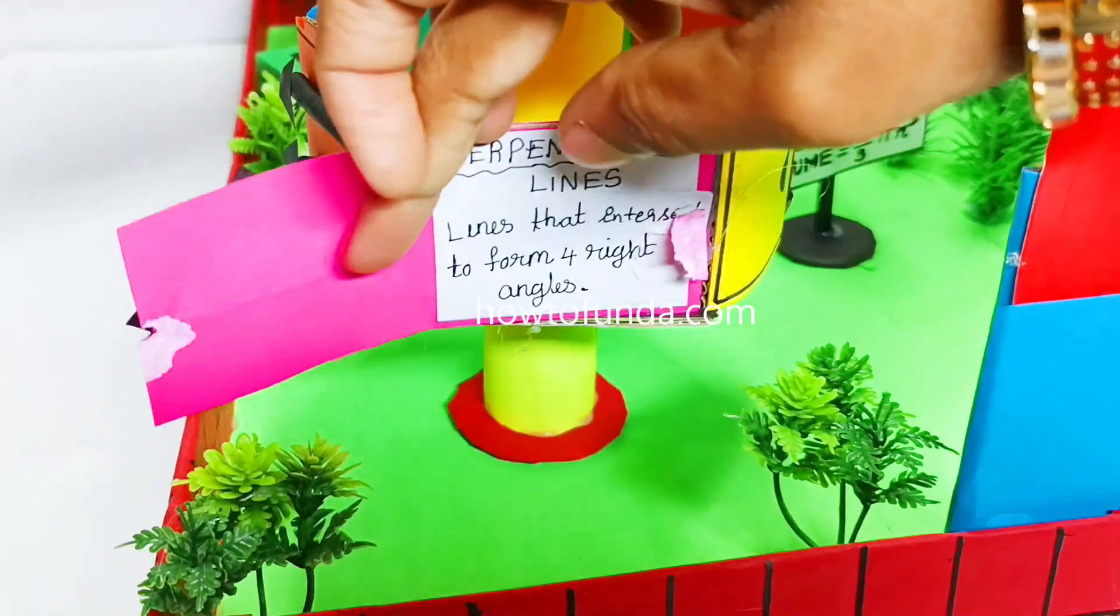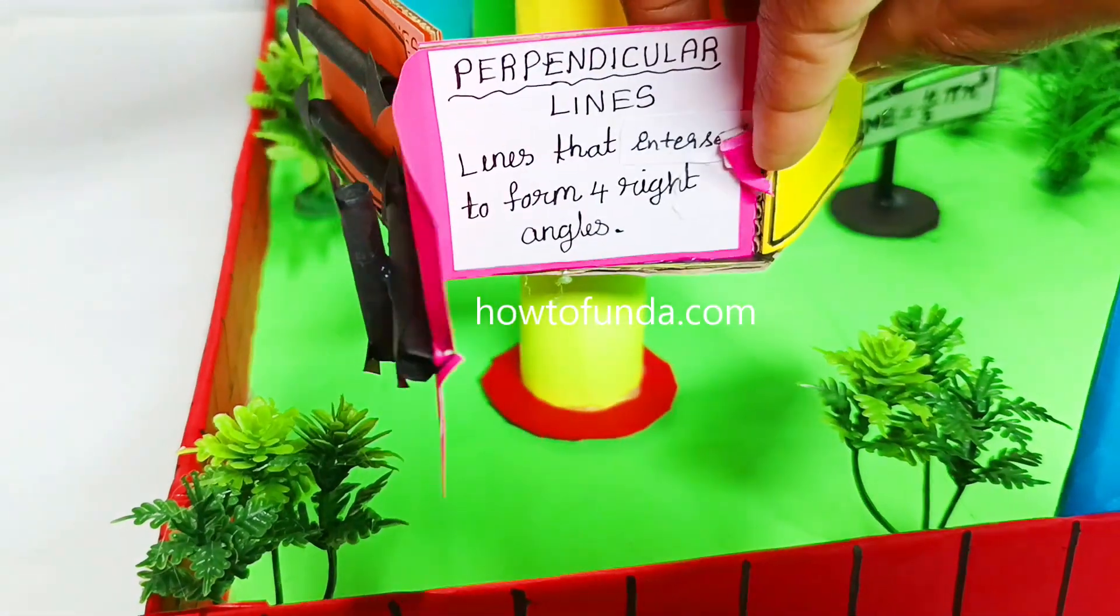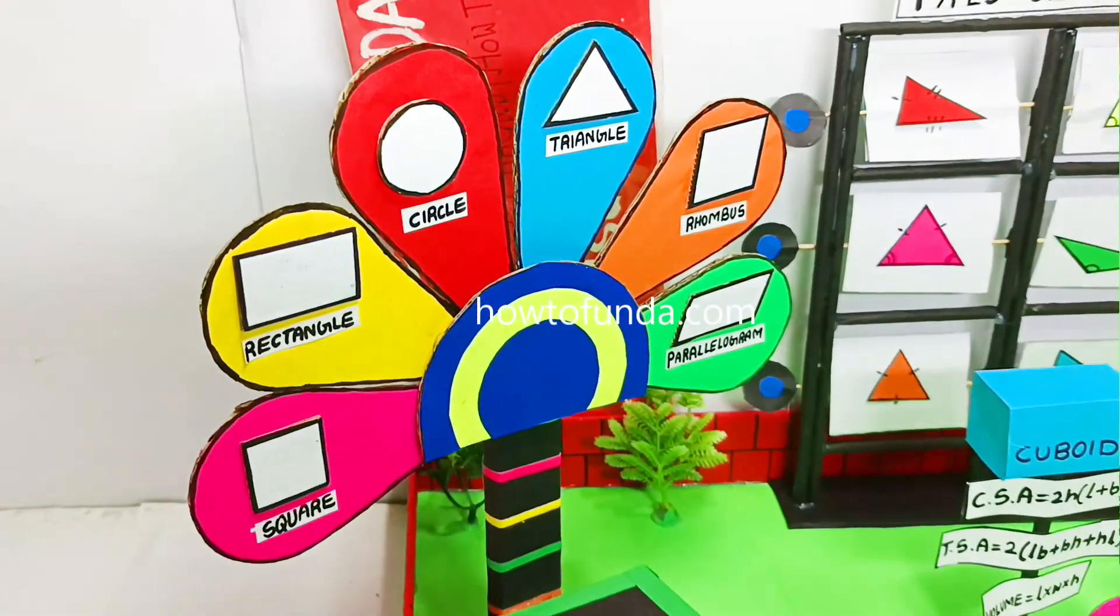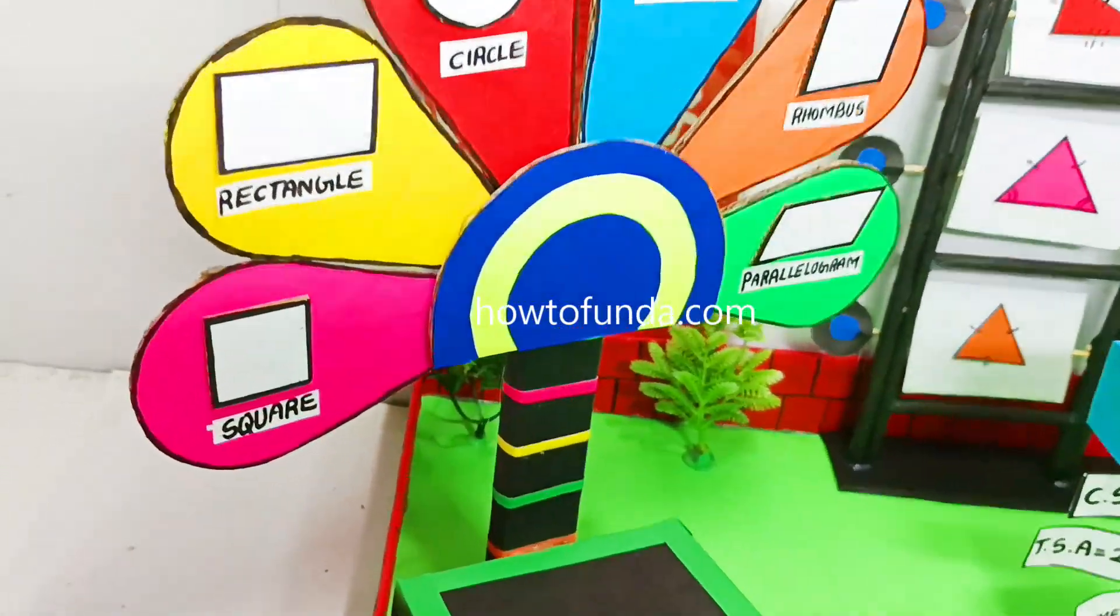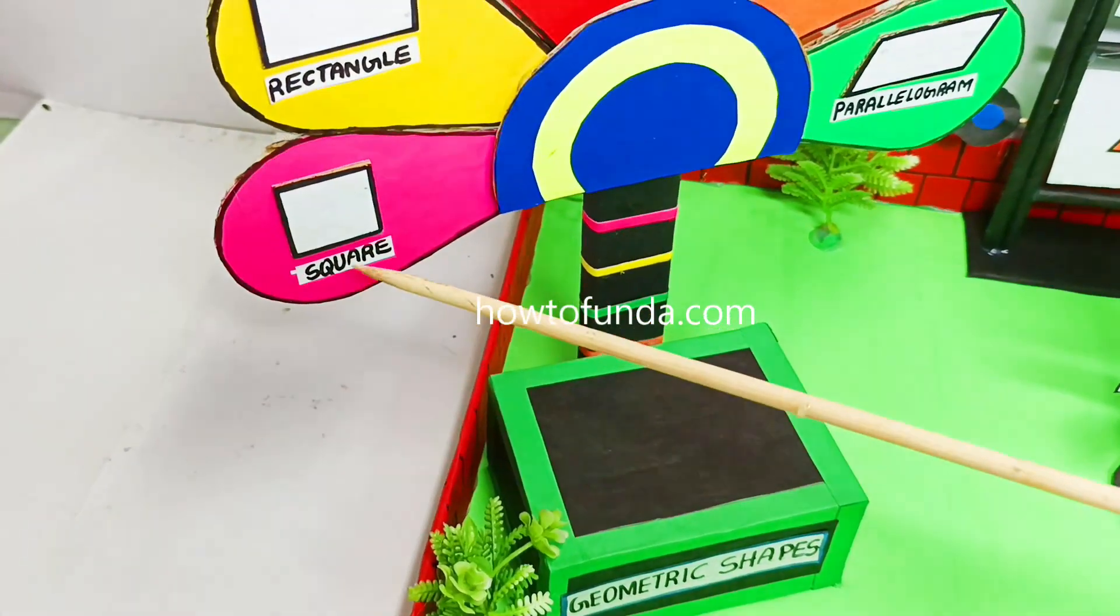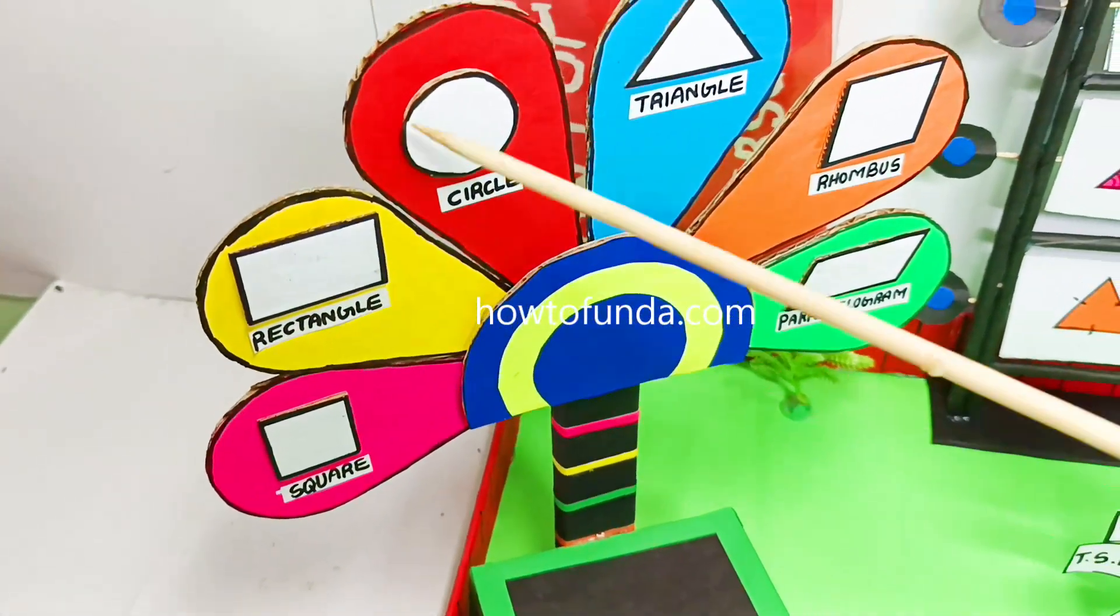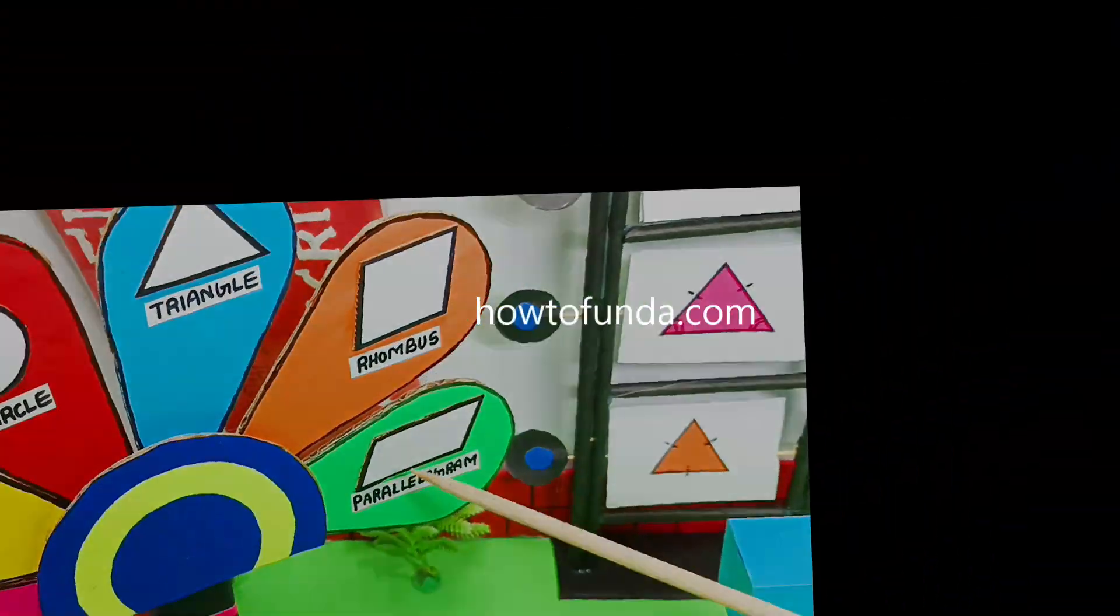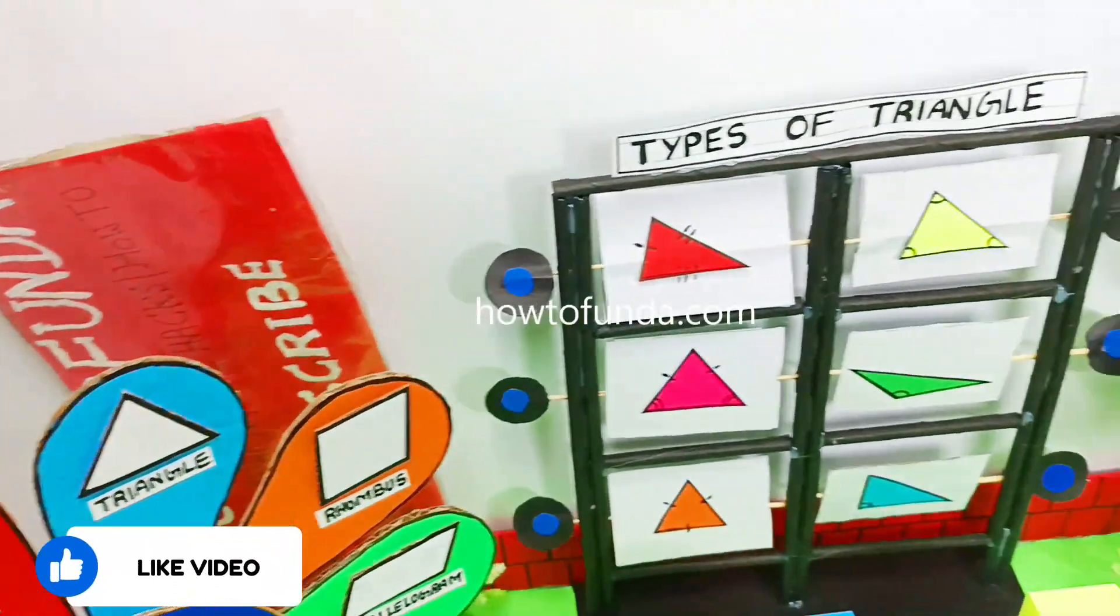We have perpendicular lines with their definitions. We have defined another model which is geometrical shapes, where we talk about square, rectangle, circle, triangle, rhombus, as well as parallelogram. The next item available in the park is types of triangles.